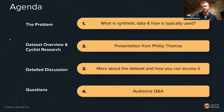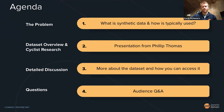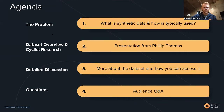Let me flip over to our agenda slide. First, we'll talk about what synthetic data is, what problem it's here to solve, and how it can typically be used. Then Philip Thomas from our machine learning team will give a presentation about the dataset overview and the cyclist research — how we've been able to improve cyclist detection on common benchmarks like KITTI and nuImages by Motional. We'll then have a more detailed discussion, show you how to access the data, and go into some audience Q&A at the end.